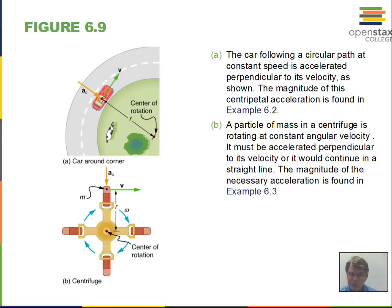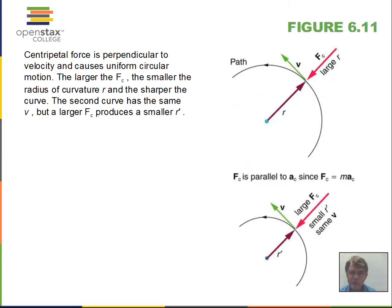Centripetal force is not a fundamental force — something causes it. If we're rotating a rubber stopper on a string, the string tension pulls the rubber stopper inward towards the center, creating centripetal force. If an object is orbiting the sun, gravity pulls it towards the sun, and that causes centripetal force.